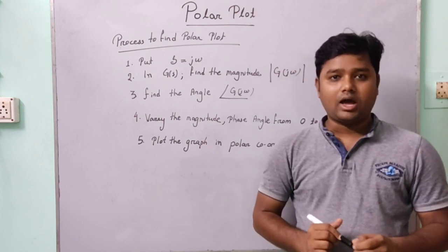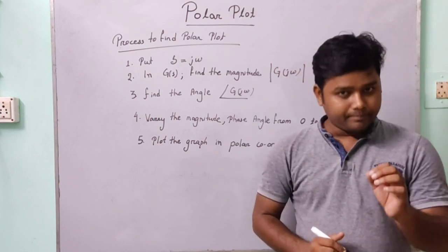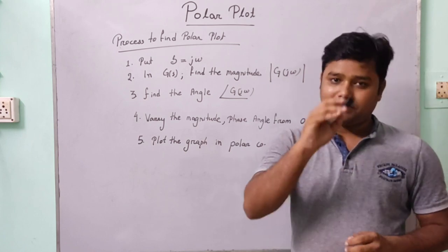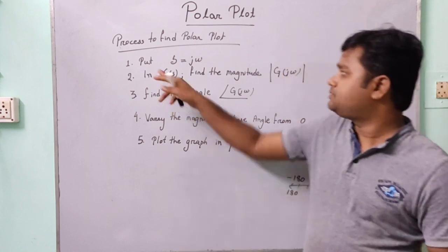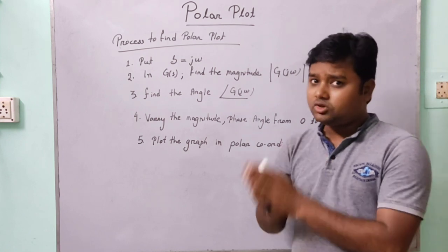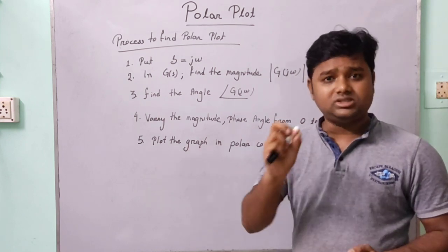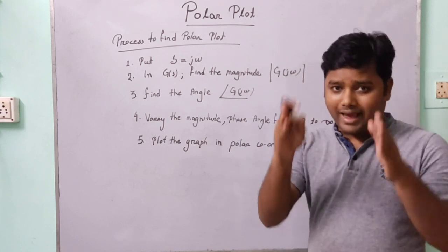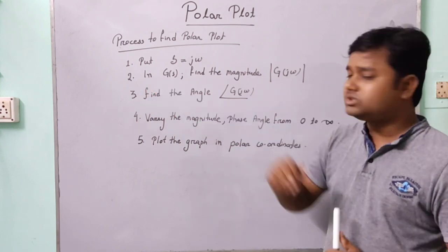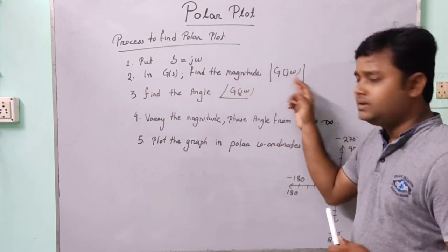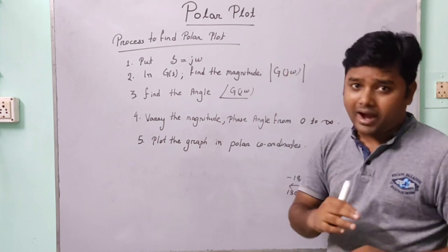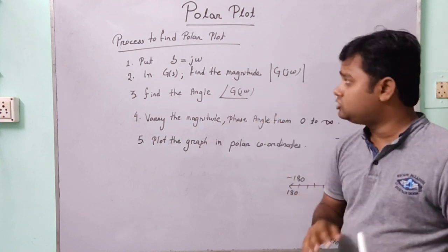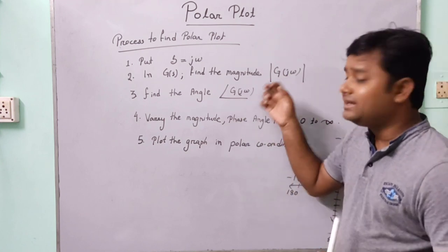Now we will study how to plot the polar plot. There are some steps to follow. The first step is to substitute s equal to j omega, so G(s) changes to G(j omega). The second step is to find the magnitude of G(j omega). The third step is to find the angle of G(j omega). So we find the formula for both the magnitude and the angle of G(j omega).